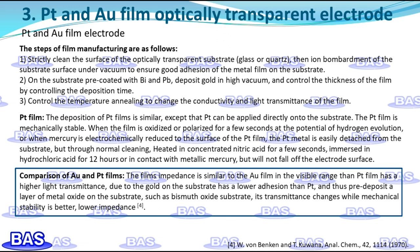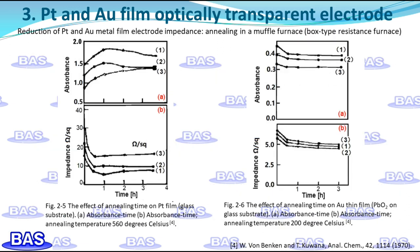Attempts have also been made to reduce the impedance of the platinum film using a substrate method, but the film prepared in this way is nearly non-transparent, especially at higher impedance. This impermeability may be due to the difference in refractive index between platinum and metal oxide. The gold film is also not easy to fall off unless it is brushed, immersed in hydrochloric acid or nitric acid, or polarized at particularly positive or negative potentials. The resistance of these films can be reduced by about 10% to 30% by annealing in a muffle furnace.